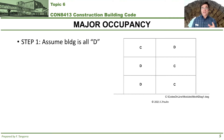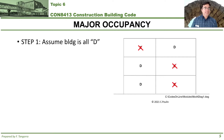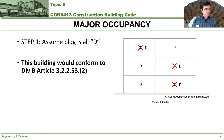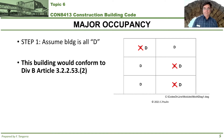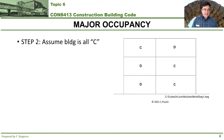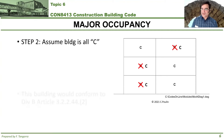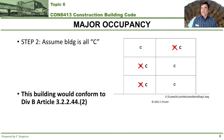With multiple occupancies — in our case C and D — the first thing you do is assume the whole building is only one of those occupancies. I chose to pretend all occupancies are D occupancy. Based on what we learned in topic five, this building would conform to Division B Article 3.2.2.53.2. Then I flip it and assume all occupancies are C, repeating the same process, and find that the building would conform to Division B Article 3.2.2.44.2.